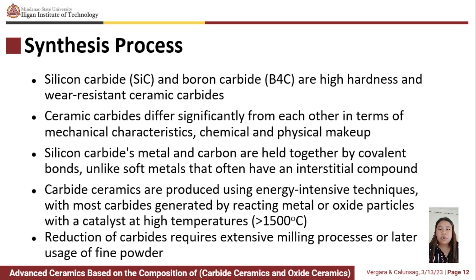For the synthesis process, silicon carbide and boron carbide are two ceramic carbides which also have high hardness and very resistant characteristics. Despite sharing mechanical characteristics, hard metals vary substantially from one another in chemical and physical makeup. Unlike soft metals, which often have an interstitial compound of covalent bonds that hold silicon carbide, metal, and carbon together, ceramic carbides are currently produced using energy-intensive techniques. Most carbides are generated by reacting metal or oxide particles with carbon at relatively high temperatures up to 1,500 degrees Celsius. The reduction of the carbides generally necessitates extensive milling processes or later usage.